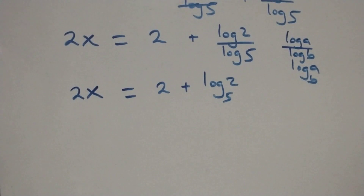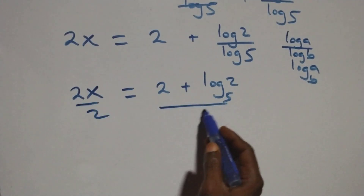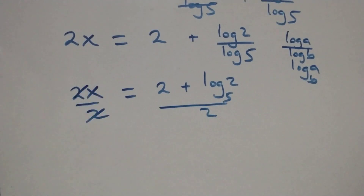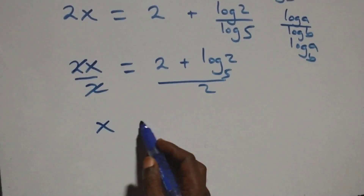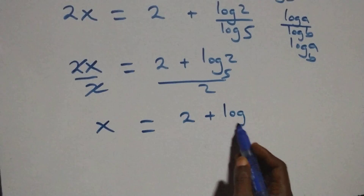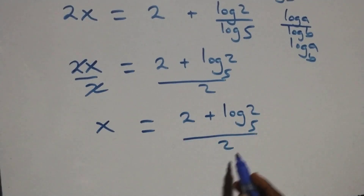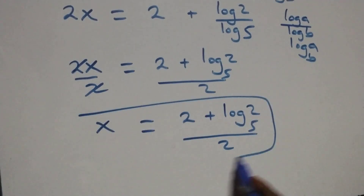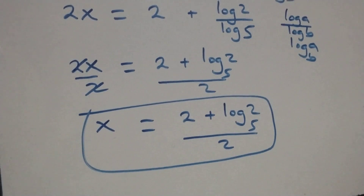Then we divide both sides by 2. The 2s cancel and we have x equals to 2 plus log 2 base 5, all over 2. That is the value of x: x equals to 2 plus log 2 base 5 all over 2. Now let's check that this satisfies the given problem.